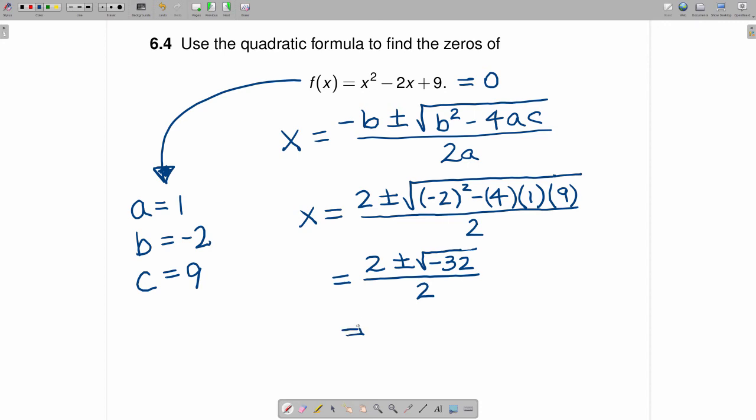This can be written as 2 plus or minus. Now because 32 is equal to 16 times 2, we can write this as plus or minus 4 times the square root of 2i.